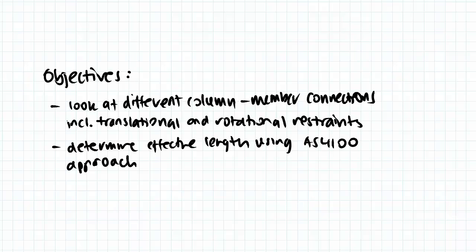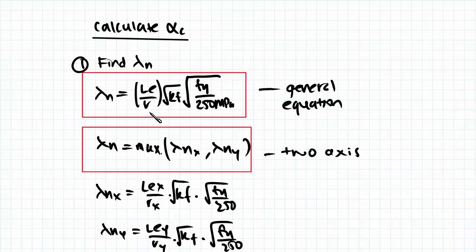Effective length is very important when we're trying to solve for our slenderness factor. The LE is what we're after. After we can find LE we can find our slenderness factor and then our alpha c, and once we do find that we can find our member capacity.